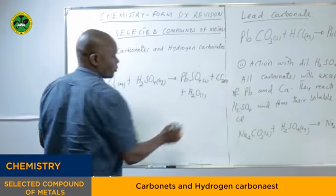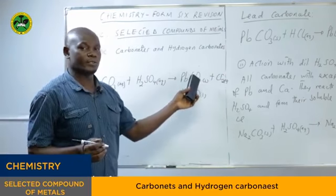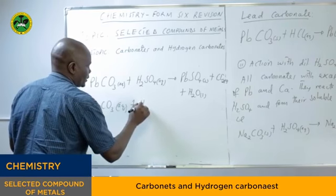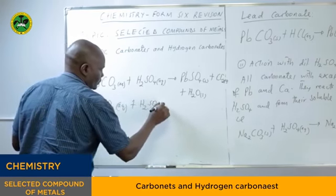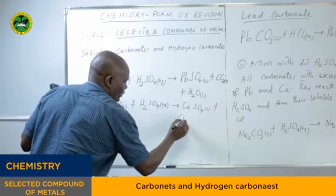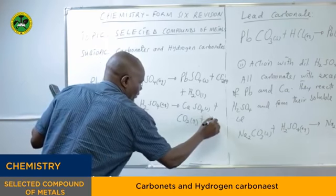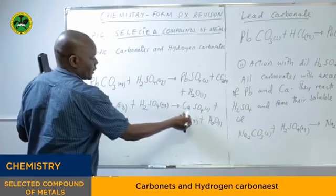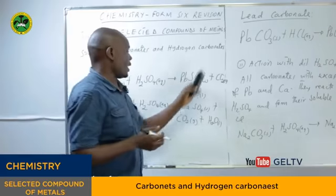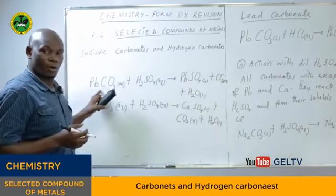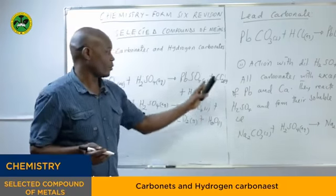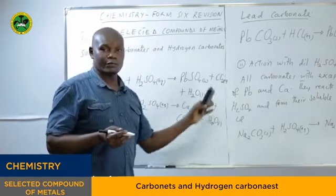The solid sulfate products formed — lead sulfate and calcium sulfate — prevent further reaction, just like lead chloride in the HCl case. That is why vessels made of lead carbonate or calcium carbonate can be used in transportation of sulfuric acid, since they form a protective coating layer on the surface that prevents further reaction from taking place.